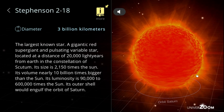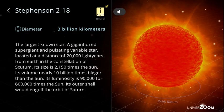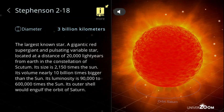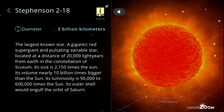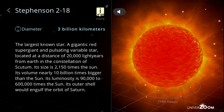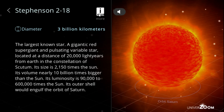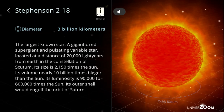Stevenson 2-18, diameter: 3 billion kilometers. The largest known star. A gigantic red supergiant and pulsating variable star, located at a distance of 20,000 light years from Earth in the constellation of Scutum. Its size is 2,150 times the sun. Its volume nearly 10 billion times bigger than the sun. Its luminosity is 90,000 to 600,000 times the sun. Its outer shell would engulf the orbit of Saturn.